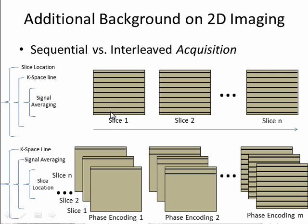Then we would move to the next line, four times, do averaging, and next line, and so on until all the lines for this slice were acquired. Then we move to the outer acquisition loop, which is slice location, so we move to the next slice, acquire the first phase encoding line, average, and so on until we make it to the final slice.